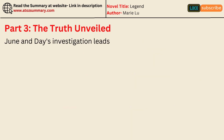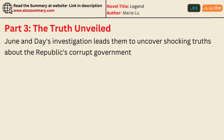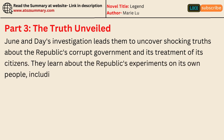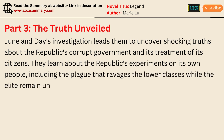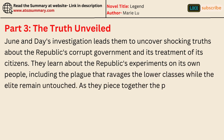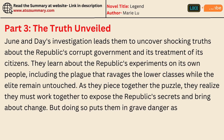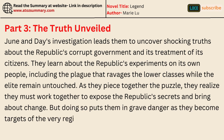June and Day's investigation leads them to uncover shocking truths about the Republic's corrupt government and its treatment of its citizens. They learn about the Republic's experiments on its own people, including the plague that ravages the lower classes while the elite remain untouched. As they piece together the puzzle, they realize they must work together to expose the Republic's secrets and bring about change. But doing so puts them in grave danger as they become targets of the very regime they seek to dismantle.